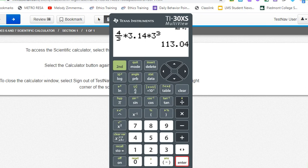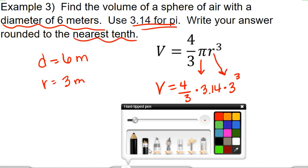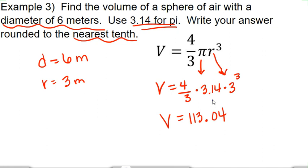113.04. So 113 decimal 04. And we're going to round to the nearest tenth, so let's do the door thing. So the tenths place is where the zero is, so we're going to draw our door here. Who's that knocking on my door? It's a 4. So the 4 tells the zero to stay, so the volume is 113.0, or you could just say 113. And it would be meters cubed, would be the volume of the sphere of air.